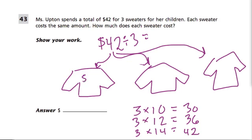So that means that each sweater had to cost $14, right? Why? Well, if you take 14 and multiply it by 3, you get $42. That's the total cost. So here, $42 divided by 3 is 14.